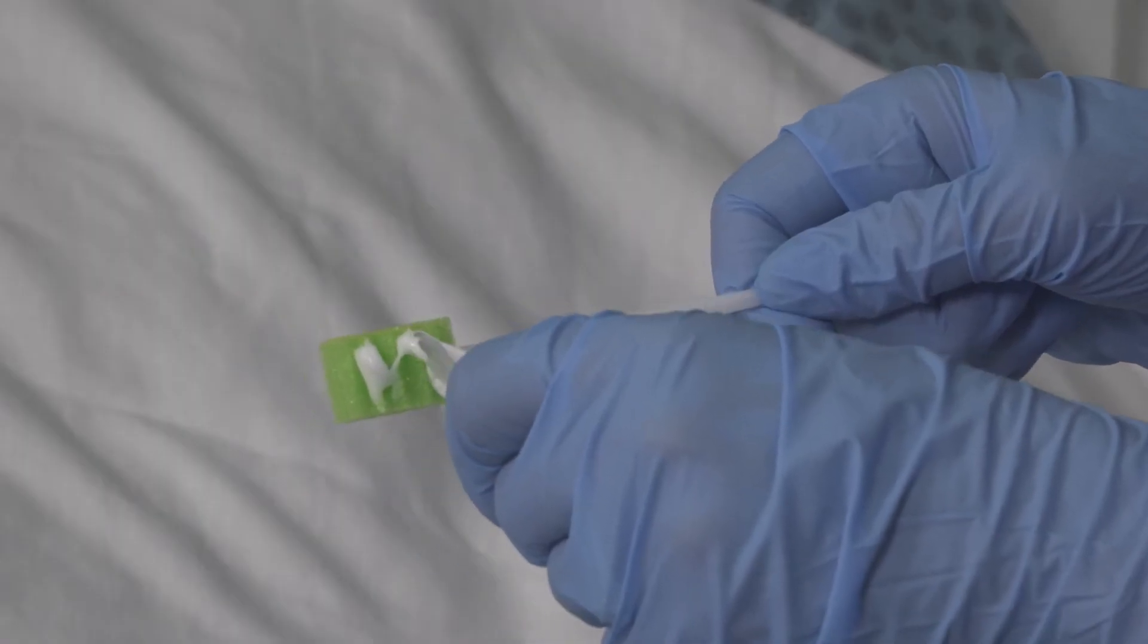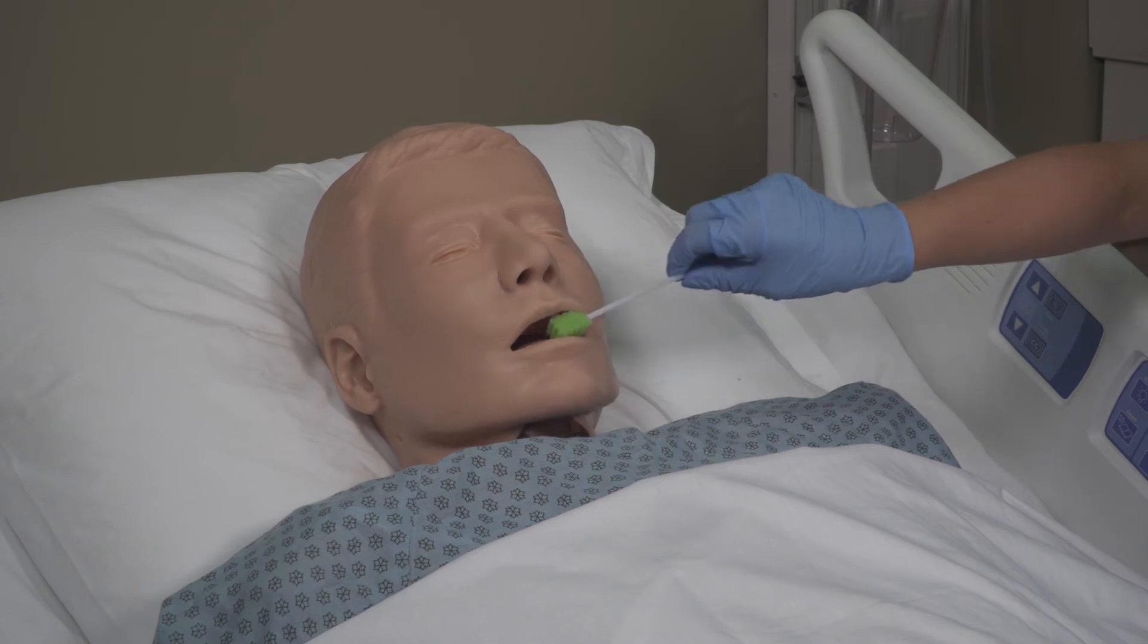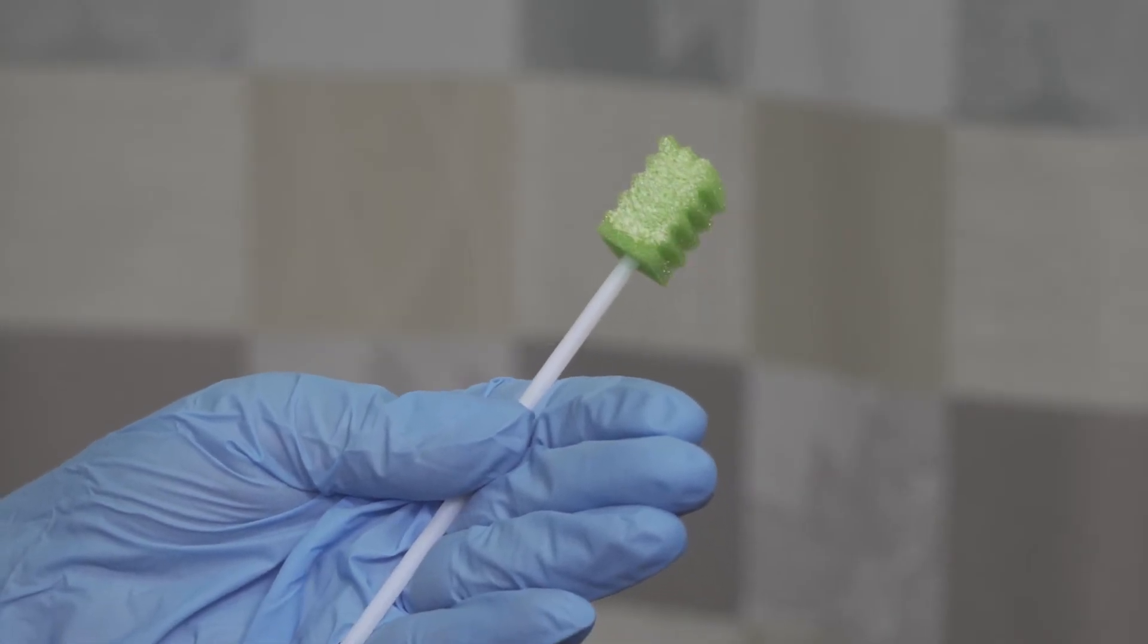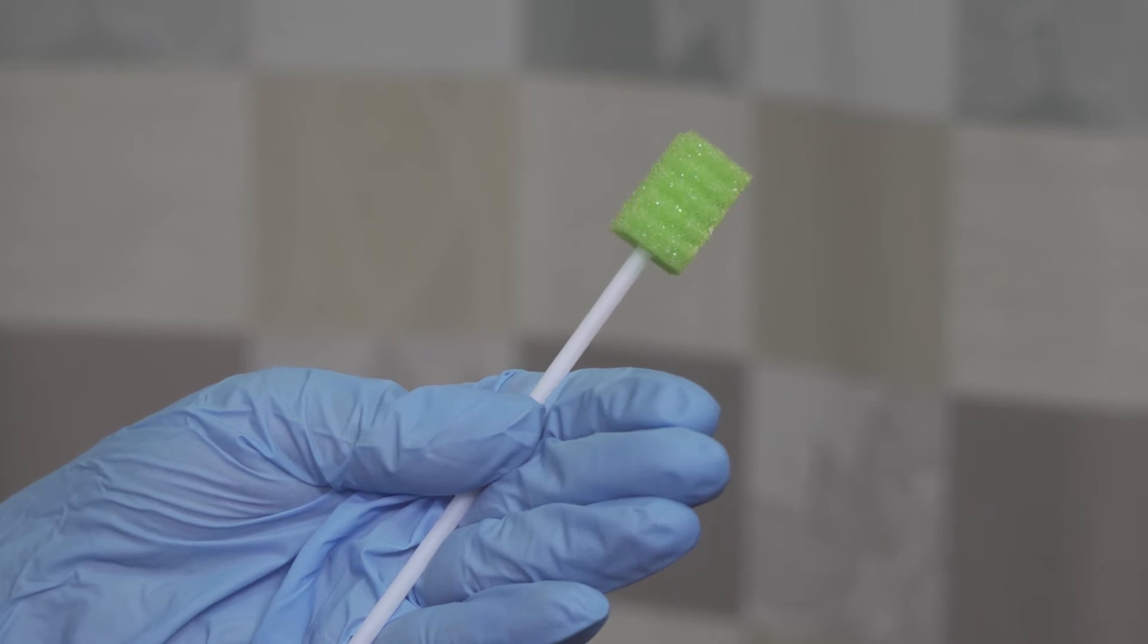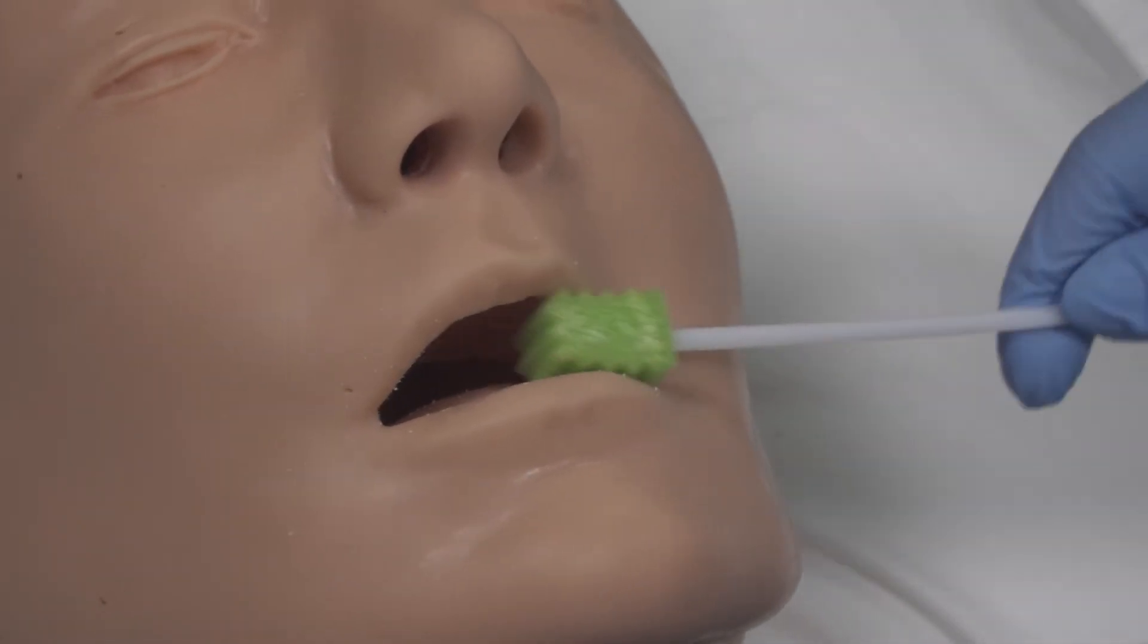Apply the mouth moisturizer to the swab. Apply to patient's mouth and lips. The perpendicular ridges on the swab help moisturize between teeth and stimulate the oral cavity. Moisturize the gums, lips, and swab the oral cavity.